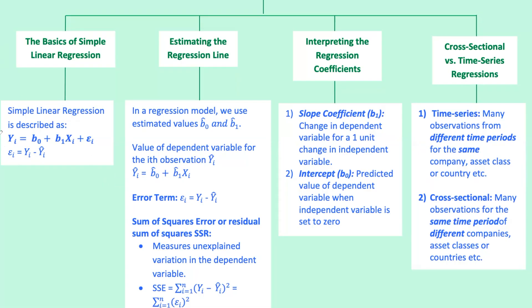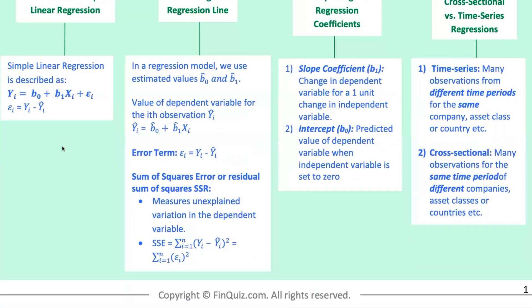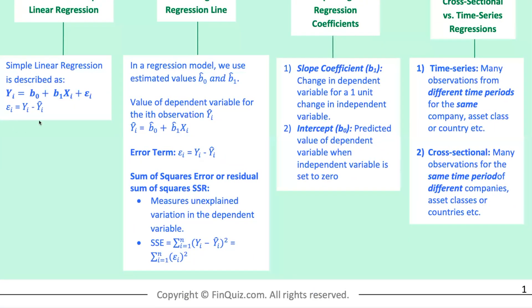Here's the equation for simple linear regression. Y is the dependent variable for observation i. X is the independent variable for observation i. B not is the intercept and B1 is the slope coefficient. The error term. We estimate B not and B1 by choosing values that minimize the sum of the squared errors.